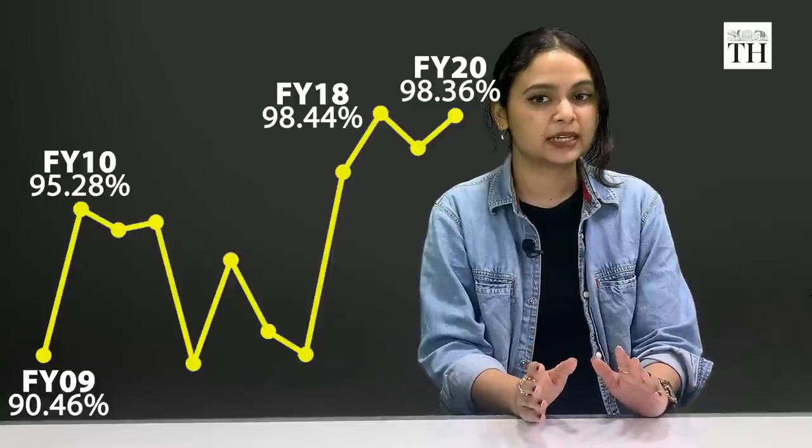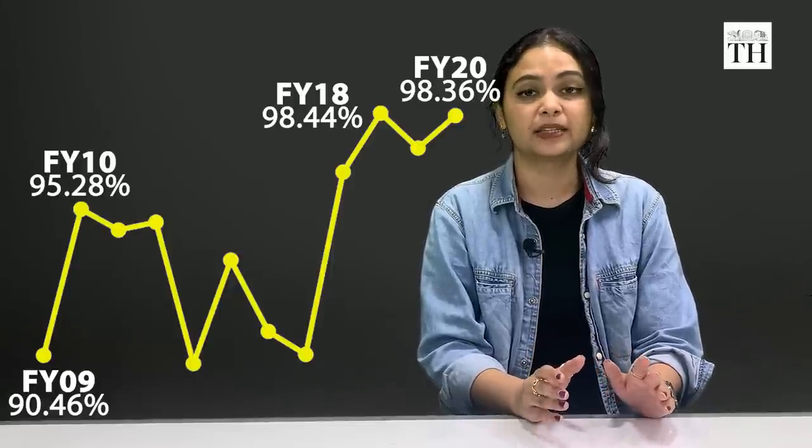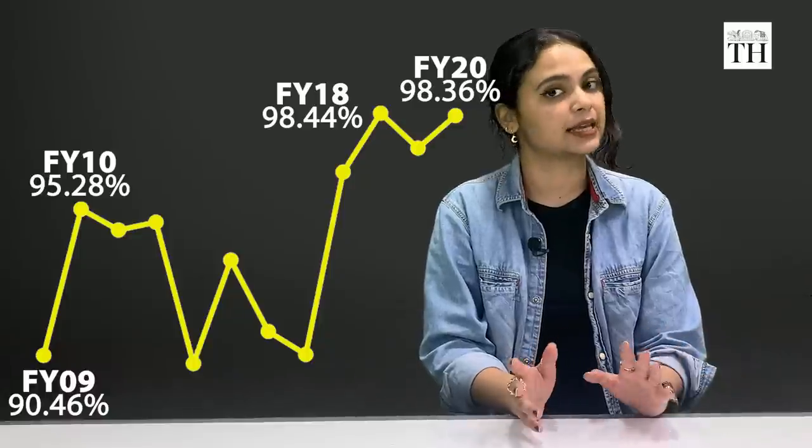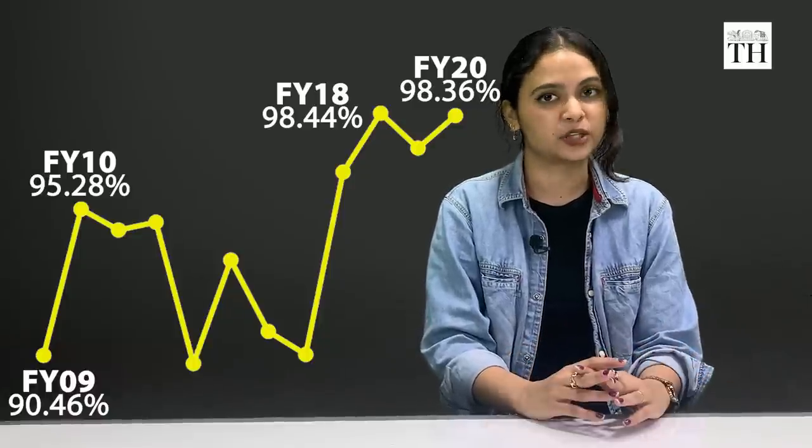But in FY 2018, the operating ratio spiked to 98 percent and stayed in the 96 to 98 percent range until FY20.